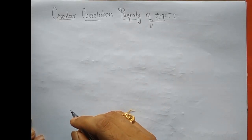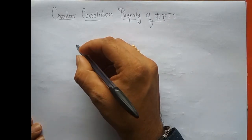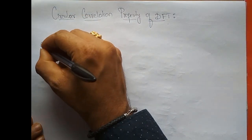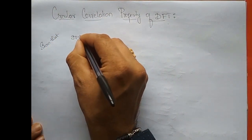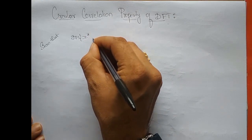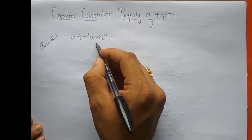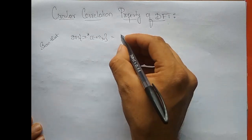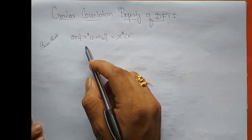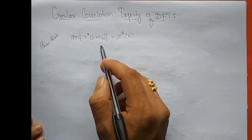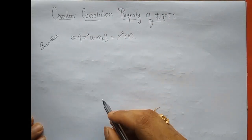Hey guys, in this lecture we are going to prove the circular correlation property of DFT. Before that, we have to prove a standard result: show that DFT of x star of minus n mod N is given by X star of k in the frequency domain — this is nothing but circular time reversal. We will prove this result first, and later prove the circular correlation property of DFT.